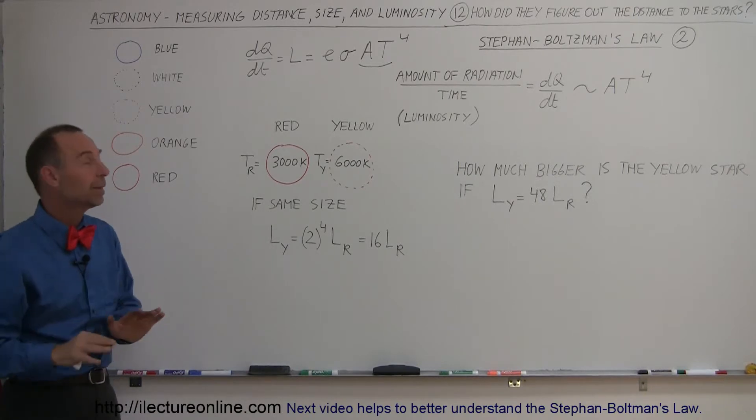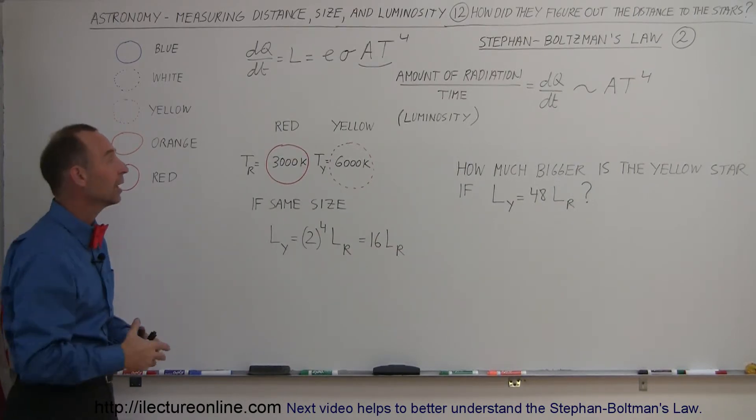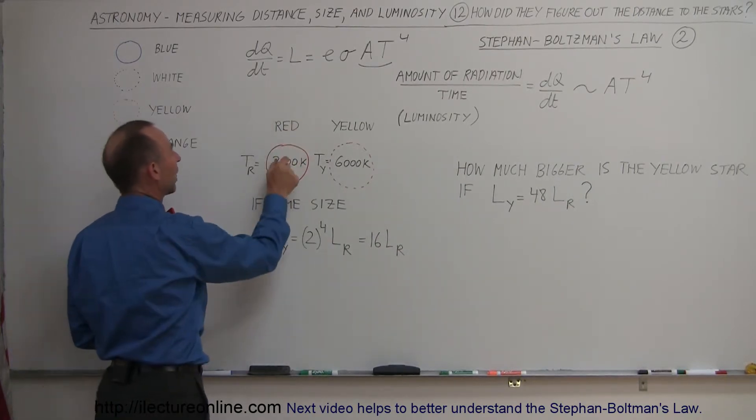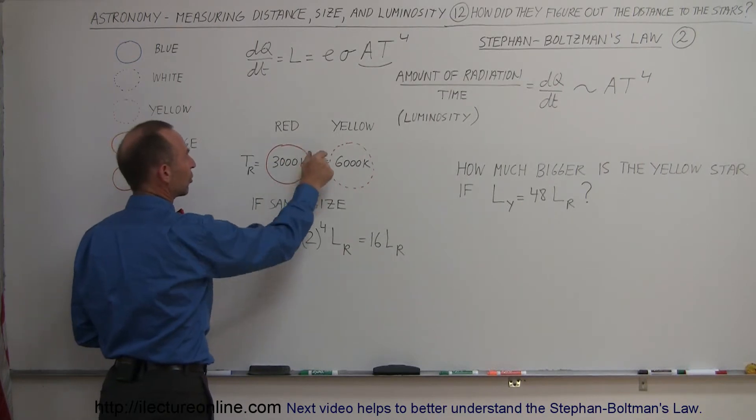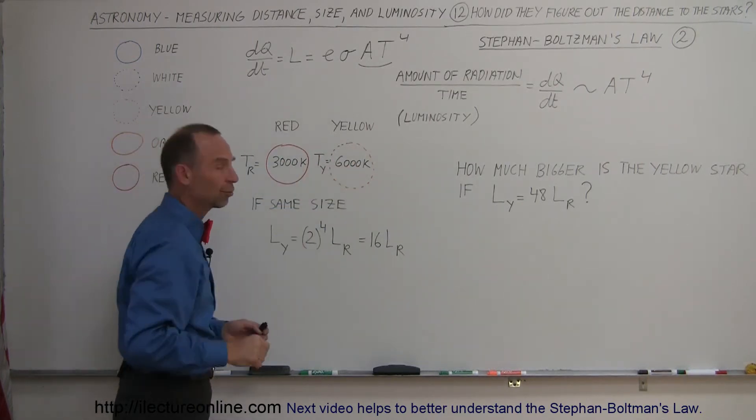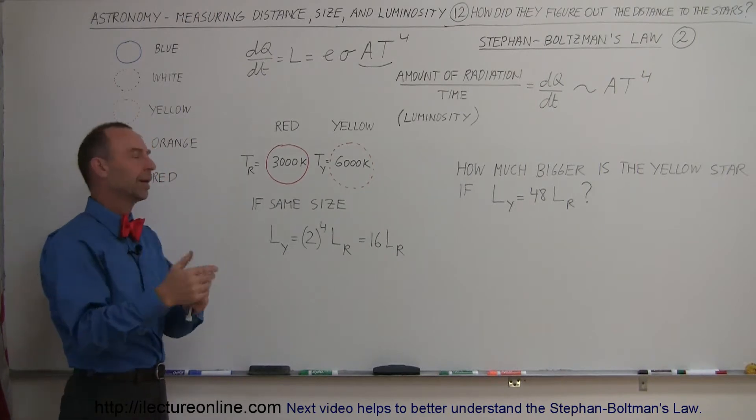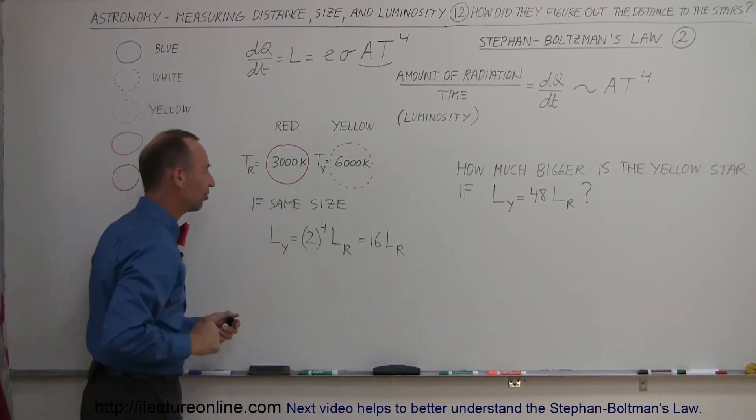Now we know in real life that's not going to be the case, but let's say for the sake of argument it was. So we have a red star at 3000 Kelvin surface temperature and the yellow star that has a surface temperature of 6000 degrees, and I don't have a yellow pen so this represents a yellow star.